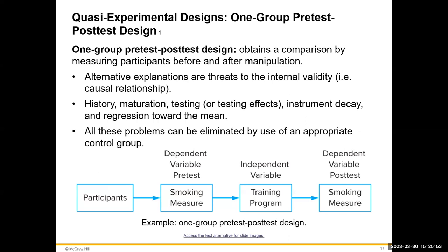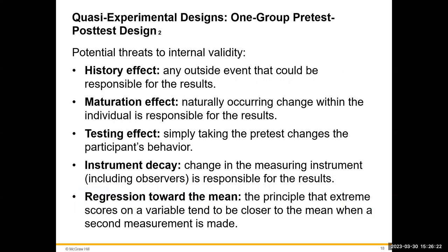All of these problems — history, maturation, testing, instrument decay, and regression toward the mean — can be eliminated by using an appropriate control group. Having a second group that does the pre-test and post-test without the independent variable or training program allows you to compare and isolate the treatment effect.